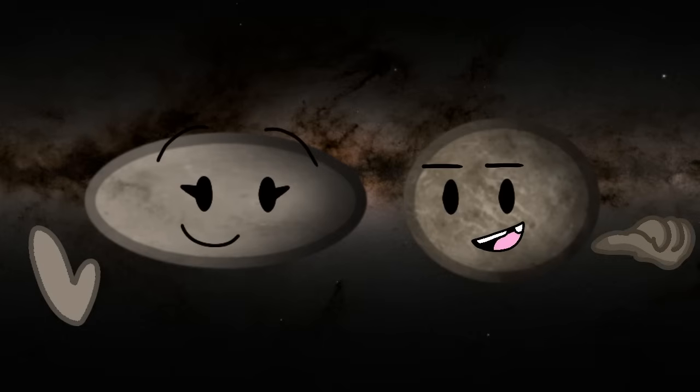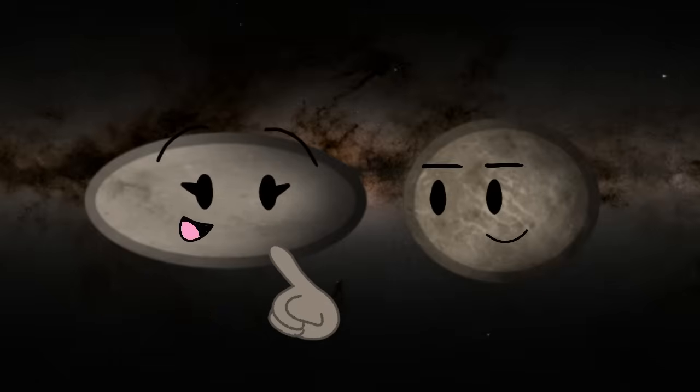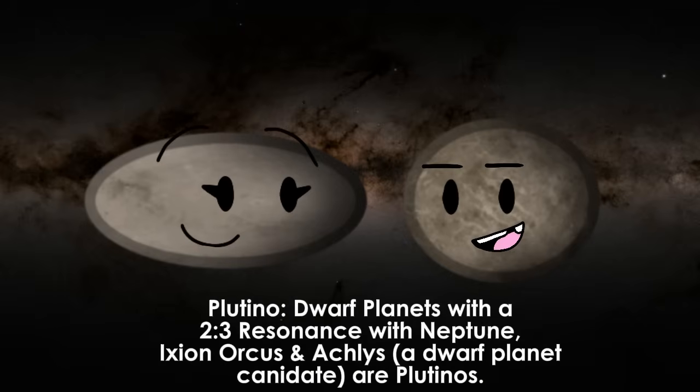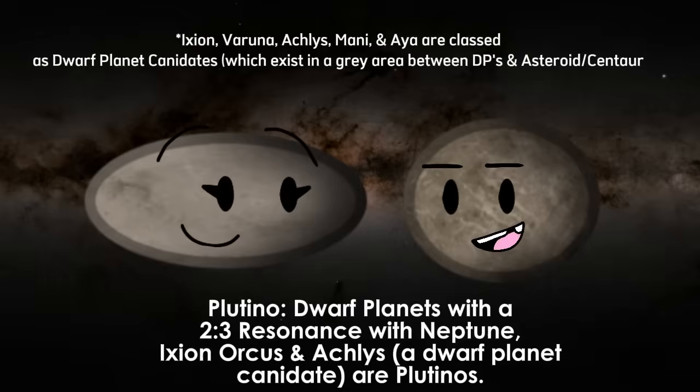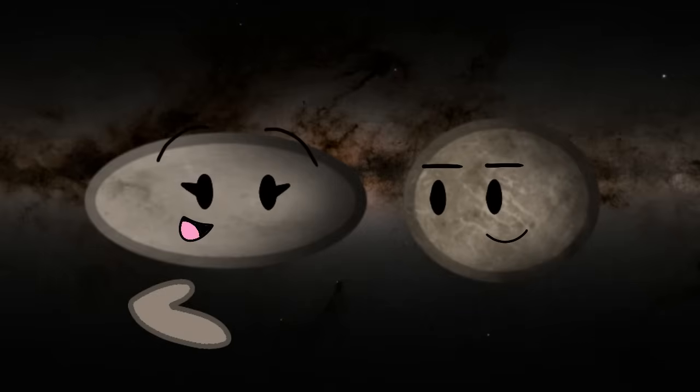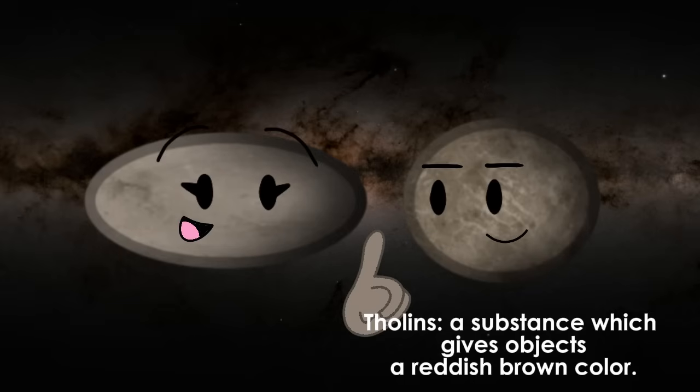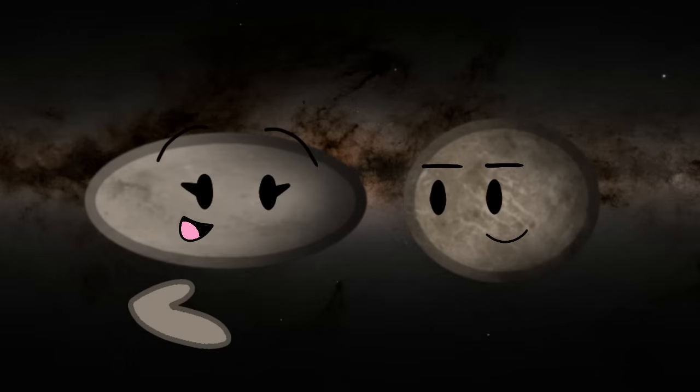My name's Varuna. And I'm Ixion. We're small and icy dwarf planets. I was named after the father of the centaurs. While I'm named after the Hindu sea god. I'm also known as a plutino, meaning me and Pluto share a 2-3 resonance with Neptune as we orbit the sun. Neither of us have moons, but we do have tholins, which is a certain chemical out here that gives objects a reddish-brown color. I'm also egg-shaped like Haumea due to my 6-hour rotation, possibly due to past impacts.